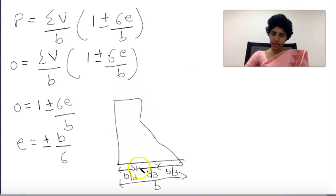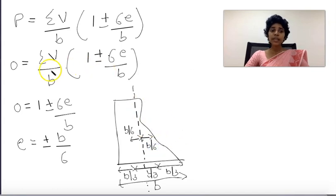So the eccentricity is b by 6. The middle third extends from b by 6 on each side from the center, defining the middle third zone.